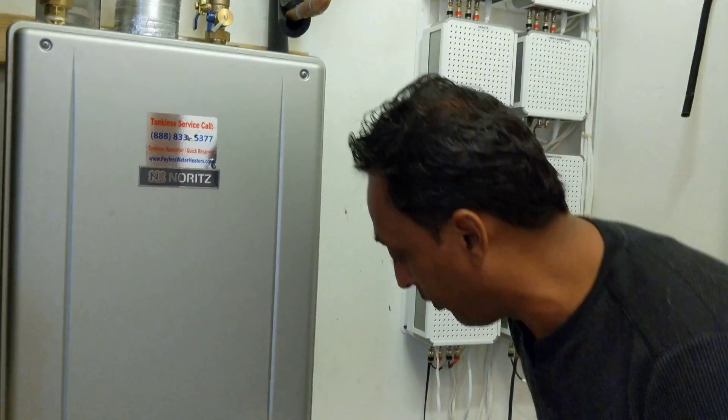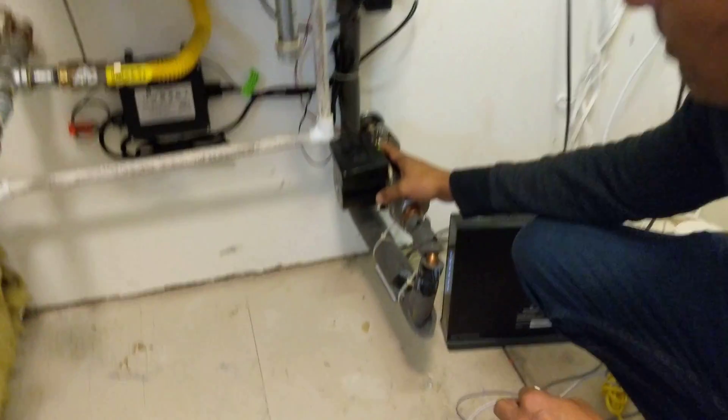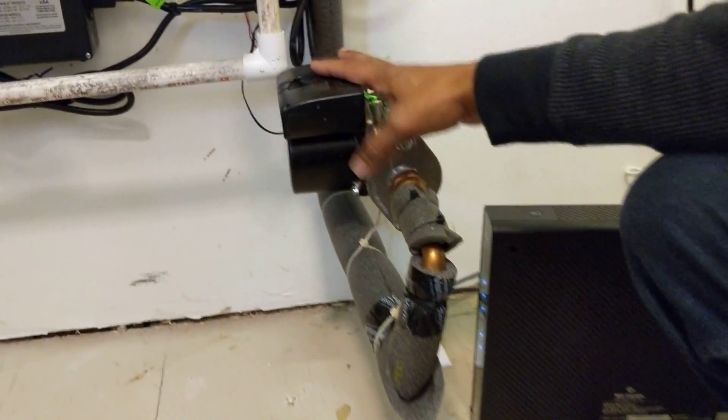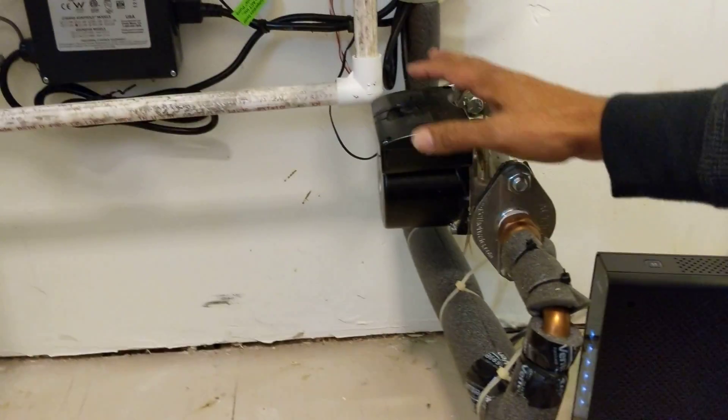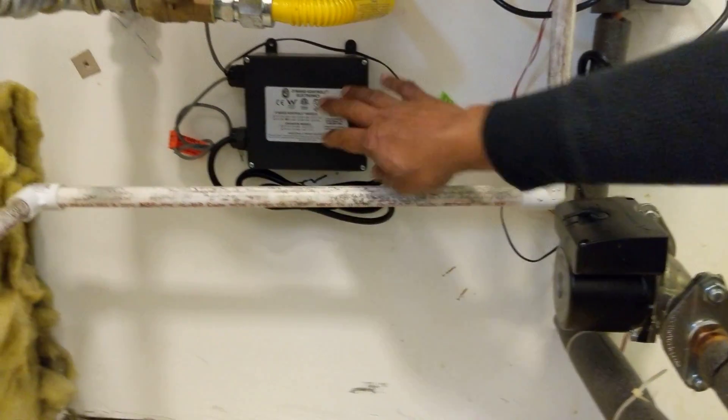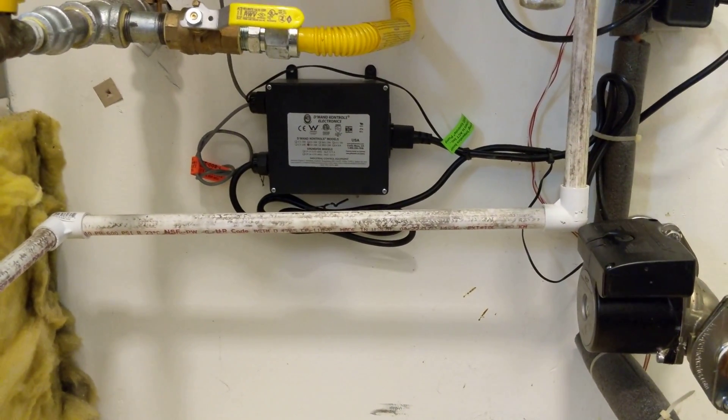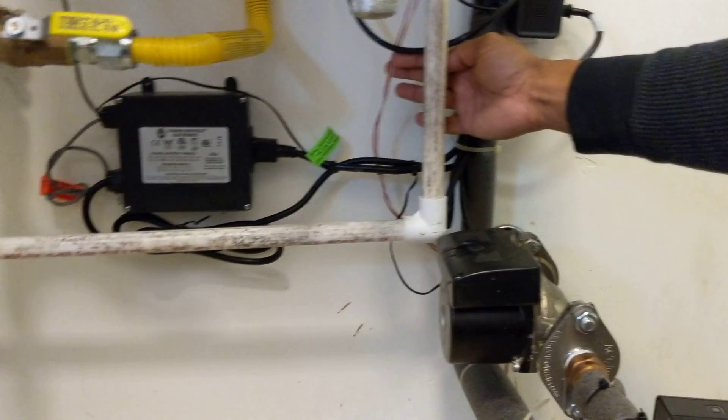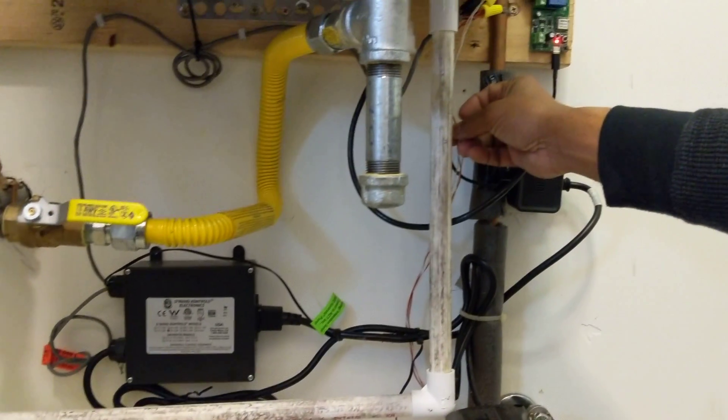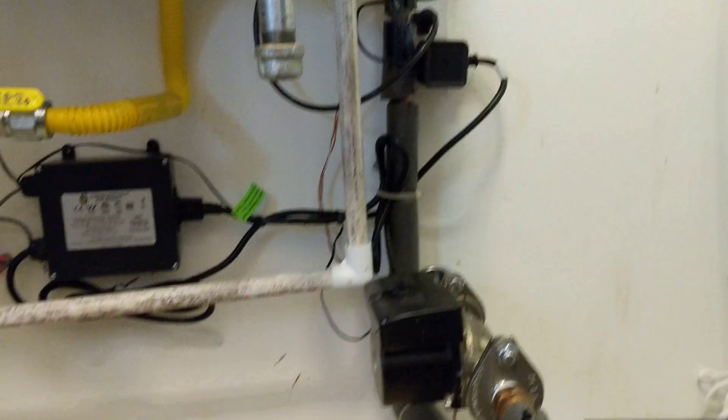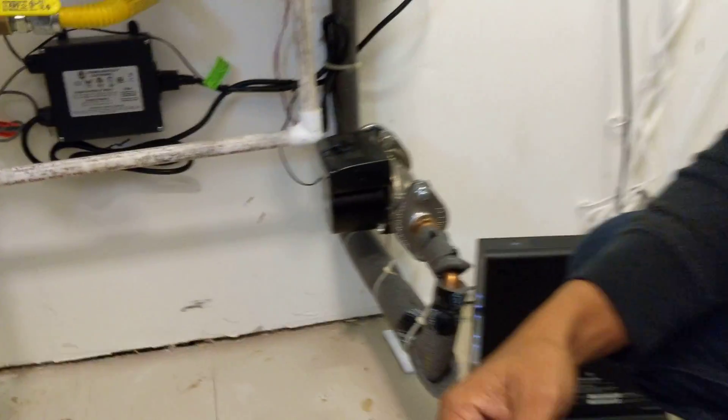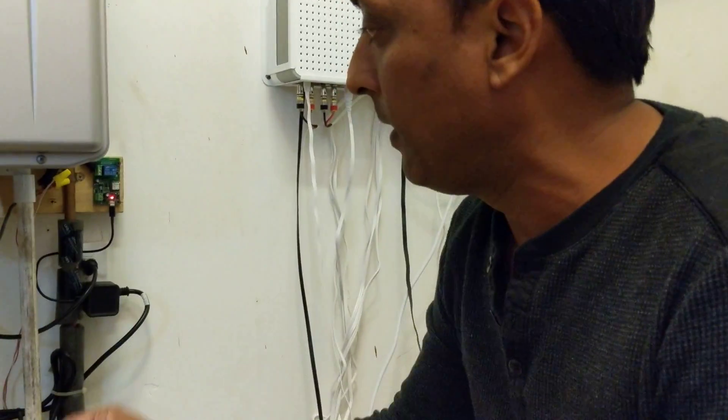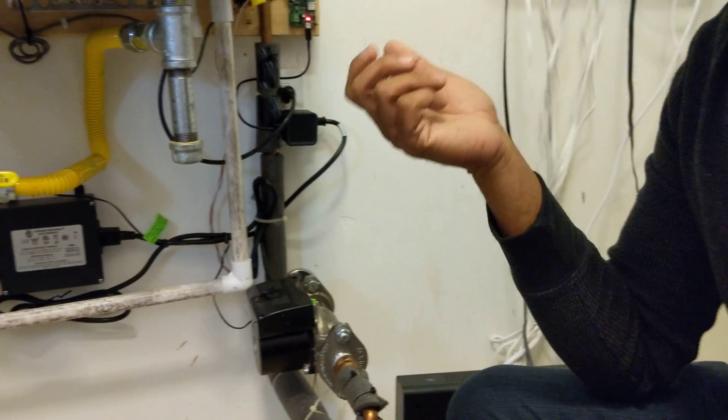So we added this demand control recirculating pump. You can see it right here. It has a little control box for its electronics. Basically it has a 12-volt signal. You can see the doorbell wire. I ran these doorbell wires to each bathroom, the furthest end of the house, furthest point in the house. And it's basically like a doorbell.